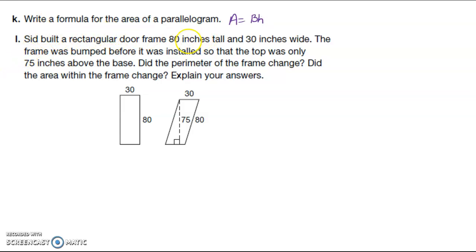Sid built a rectangular door frame 80 inches tall and 30 inches wide. The frame was bumped before it was installed, so the top was only 75 inches from the base. Did the perimeter of the frame change? Did the area change? Explain your answers. So here I have this, this, and this, and my perimeter is gonna be 80 plus 30 plus 80 plus 30, which is 220. Here, same thing: 30, this side is still 80, my perimeter is still the same. So the perimeter is the same.